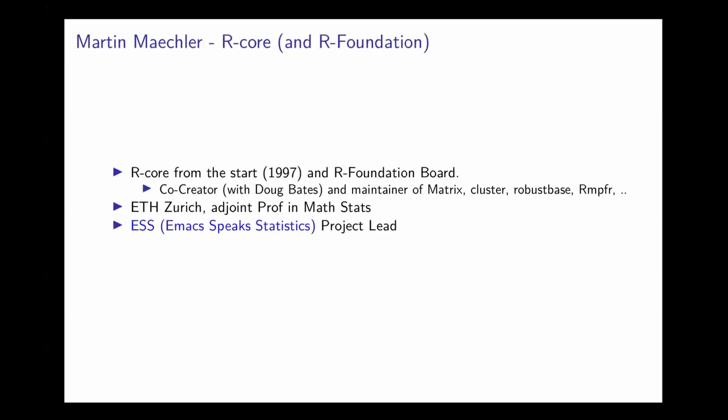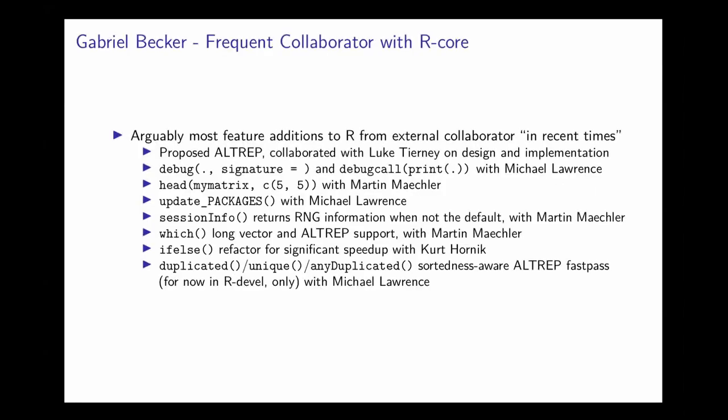Martin is an R core and R Foundation member who has been on the course since its inception in 1997 and sits on the R Foundation board. He's the co-creator with Doug Bates and maintainer of the Matrix package, a joint professor in mathematical statistics at ETH Zurich, and project lead of ESS (Emacs Speaks Statistics).